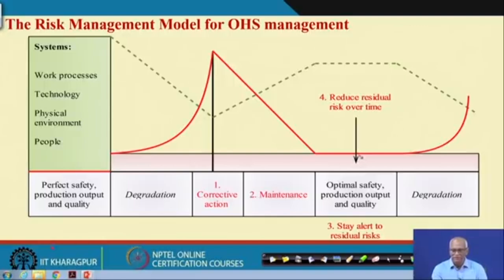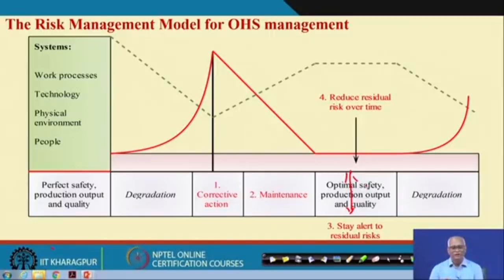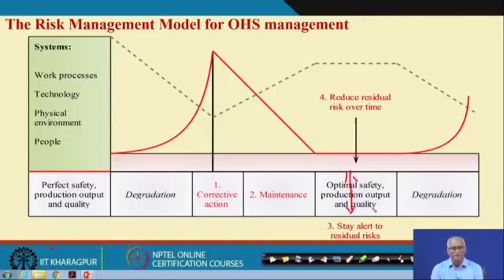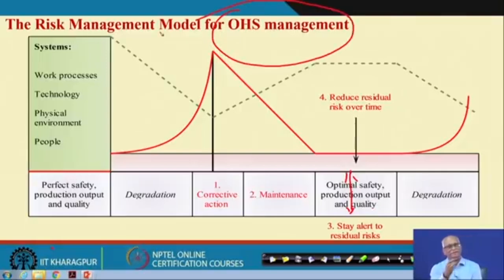You have to hold the risk at the ALARP level and try to reduce the residual risk. Then address the entropic risk, then address the residual risk, and hold it at the ALARP level. That is the purpose of the occupational health and safety management system.